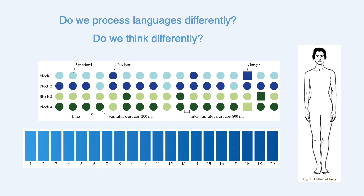We look into whether people with different native languages process language differently. For example, in Russian and Greek there are two separate words for dark blue and light blue, whereas in English we only say blue. Would that mean Greek speakers are faster at recognizing shades of blue than English speakers? Does their language facilitate their thinking? Likewise, languages outline body parts differently — if a language has only one word for a limb without dividing into leg and arm, or no separate word for hand and fingers, does that mean speakers also perceive their body parts differently, or is the difference just in the labeling?